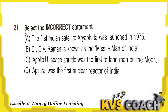Question 21: select the incorrect statement. Option A — the first Indian satellite Aryabhatta was launched in 1975 — this is correct. Option B — Dr. C.V. Raman is also known as the Missile Man of India — no, this is wrong. The Missile Man of India is Dr. APJ Abdul Kalam. Dr. C.V. Raman is the father of physics in India and also won the Nobel Prize for Physics. Option C — Apollo 11's space shuttle was the first to land man on the moon — correct. Option D — Apsara was the first nuclear reactor of India — also correct. So the wrong statement is option B.